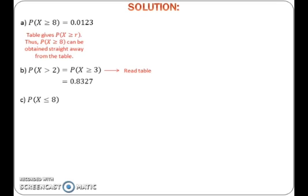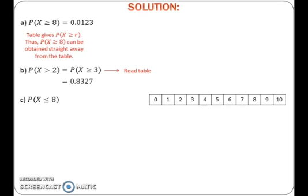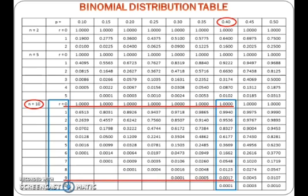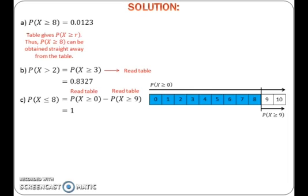To find the probability of x less than or equals to 8, first draw a number line from 0 to 10. After that, mark the part that we want, which is 0 until 8. To get this, take all of probability of x greater than or equals to 0 and cut off the probability of x greater than or equals to 9. Read both values from the table and calculate the probability.